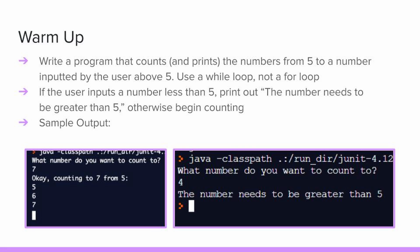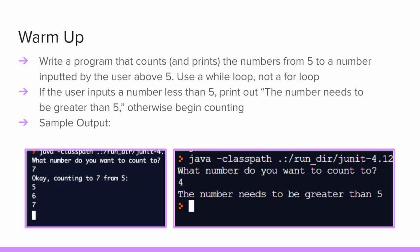Today's warm-up asks us to use a while loop to count and print out the values from 5 to a number inputted by the user. If the user doesn't follow the instructions and inputs a number less than 5, we'll print out 'the number needs to be greater than 5.' Try pausing the video here and writing your code. If you get stuck, here are a few hints: you'll need to use if statements, a scanner, and while loops to complete this exercise.